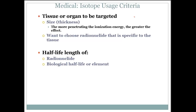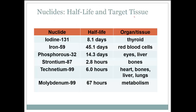We don't want to inject something into somebody's body that's going to be there for thousands of years. For medical purposes, we're looking at half-lives that are days or hours long. For instance, iodine is used for the thyroid with a half-life of only 8.1 days. Strontium is used for bones with a half-life of 2.8 hours. So the difference between years and hours is the big difference between medical uses and geological dating uses.